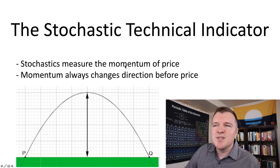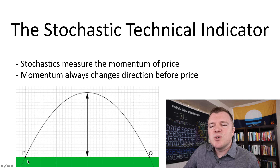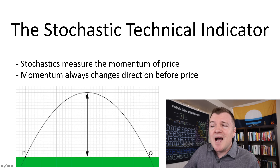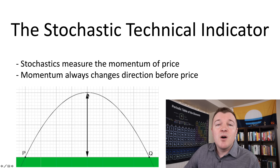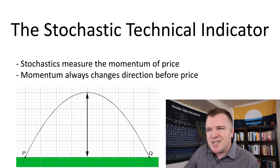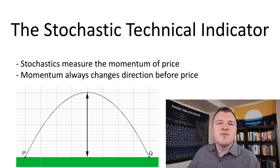The theory is that momentum has to change before direction can change for a stock price. So if you're standing right here and you throw a ball very high in the air, initially its velocity, its y vector, is very fast. However, at some point gravity takes over, momentum halts, and it changes direction as gravity pulls it back down to the ground. This is what we're trying to get signals for.